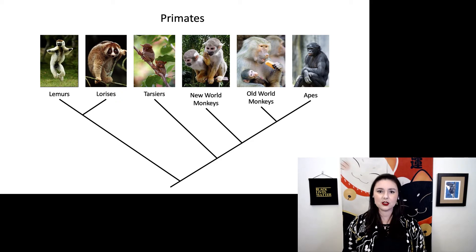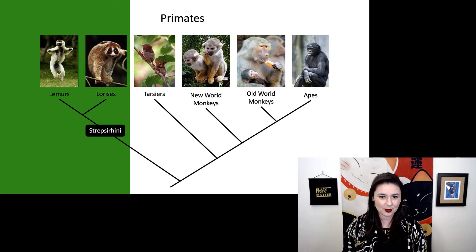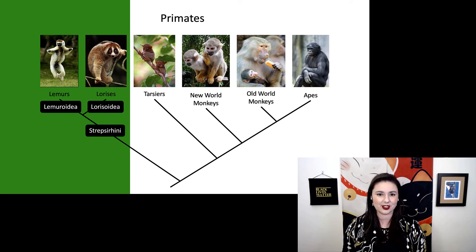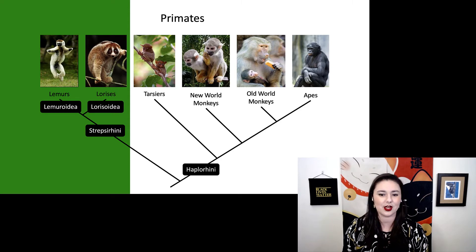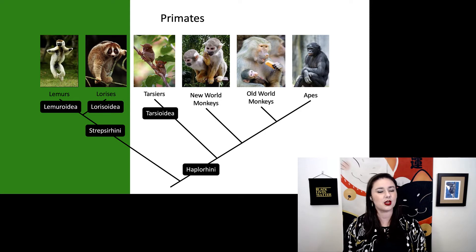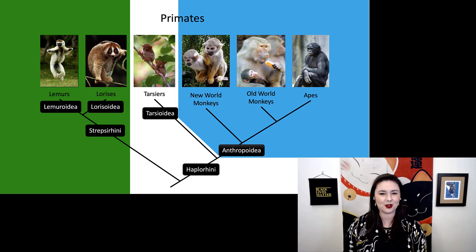The most fundamental difference is we have strepsirrhines on this half — all of these are strepsirrhines, which we separate out into our lemurs and our lorises, or lemuroidea and lorisoidea. The other half are our haplorhines, or in the order haplorhini. Within our haplorhines, we have our tarsioidea off doing their own thing, and then all of these here are our anthropoidea, sometimes called simiiformes.